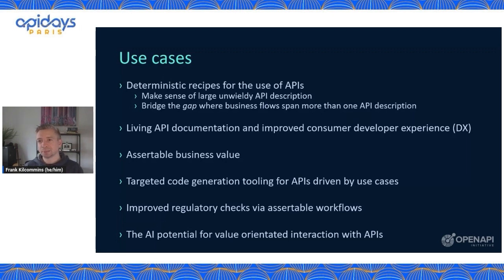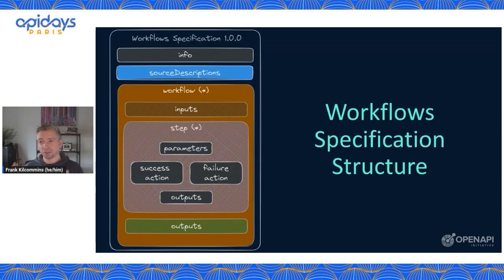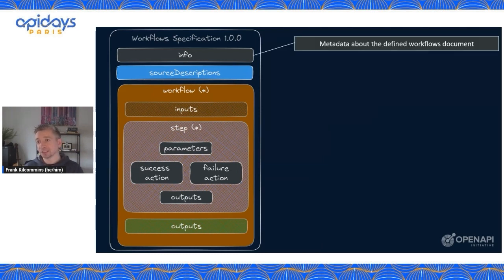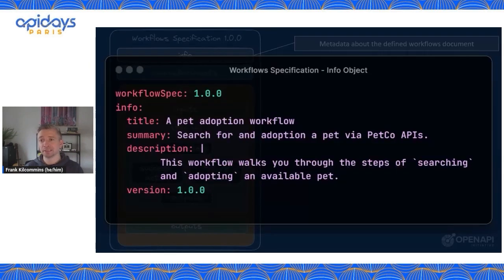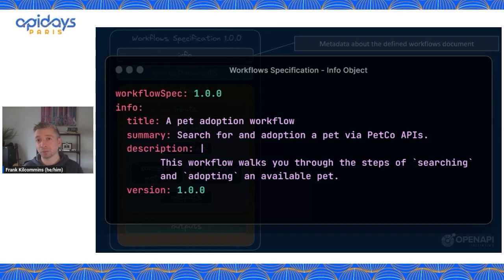Let's jump into the specification itself and understand the structure. If you're familiar with OpenAPI or AsyncAPI, you're going to see lots of similarities as we walk through this. First, we have the info object — this is just metadata about the specific workflows description or document itself. It'll have a title, a summary, a description, and then the version of the specific document. At the top, we're also decorating this file with the version of the Workflow Specification we're talking about — right now we're working on version 1.0.0.